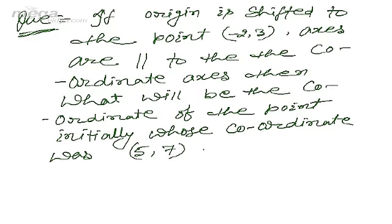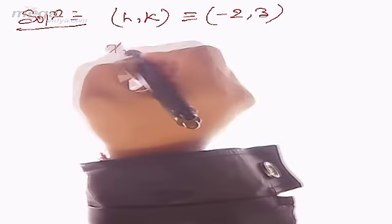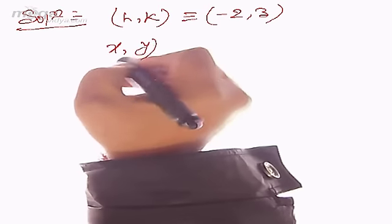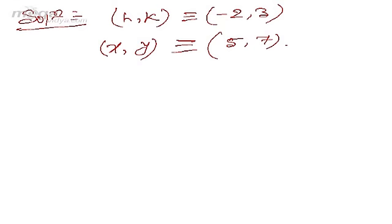The question is: if the origin is shifted to the point (-2, 3) and the axes are parallel to the coordinate axes, what will be the coordinates of the point whose initial coordinates were (5, 7)? Here, h = -2 and k = 3, and the initial coordinates of the point are (5, 7).